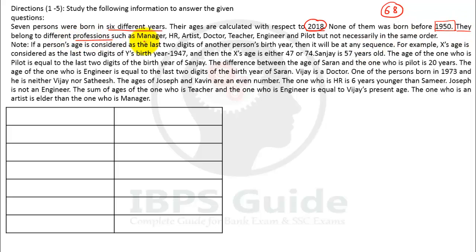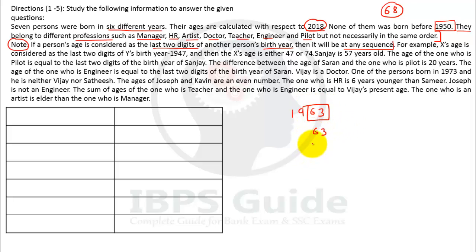They belong to different professions. Now, there is an important rule to note carefully: if a person's age is considered as the last two digits of another person's birth year, then it can be in any sequence. For example, if someone's birth year is 1963, then the last two digits are 63, so someone's age could be 63 or 36 — at any sequence. Is this concept clear? Good.